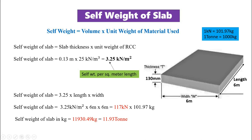If we need the weight of the entire slab including width and length, then just multiply self weight of slab per square meter with length and width. The length is taken as 6 meter and width is also taken as 6 meter. Then we will get self weight of entire slab as 117 kN. If we need kN to kg, then multiply with 101.97 kg. Then self weight of slab in kg will be 11,930 kg, which is nothing but 11.93 tons.